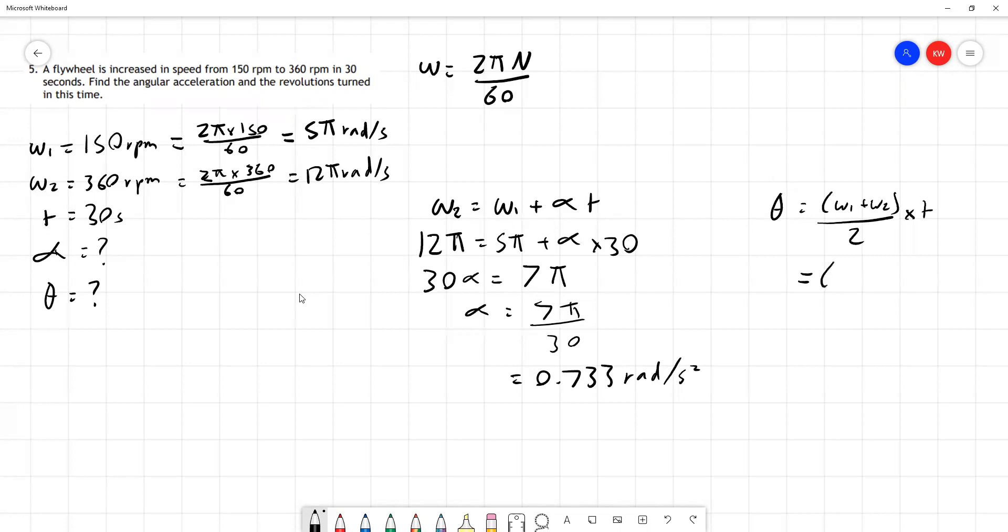Keeping these pi values we've got 5 pi plus 12 pi divided by 2 times 30, which is the same as 17 pi over 2 times 30, and multiplying that through, again leaving the pi in, we've got 255 pi radians.